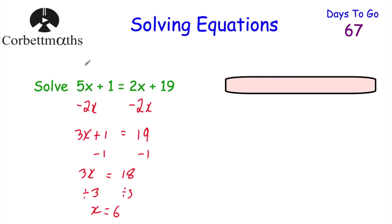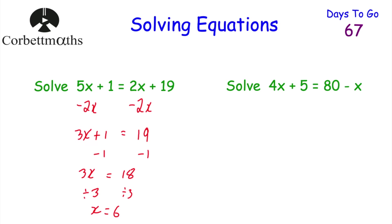We can test that: 5 times 6 is 30, plus 1 is 31 on the left-hand side. On the right-hand side, 2 times 6 is 12, plus 19 is 31. So 31 equals 31. Perfect. Here's another question: 4x plus 5 equals 80 subtract x. Feel free to pause and try this question.